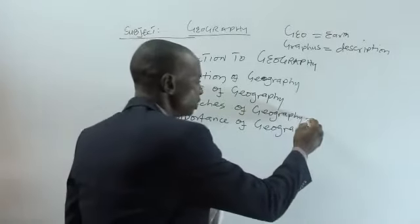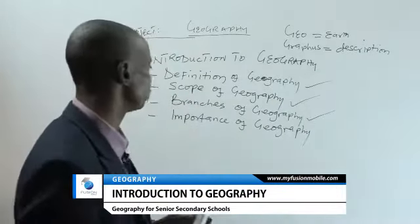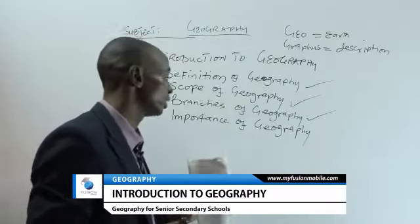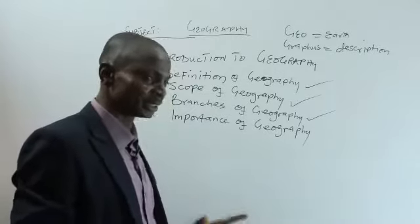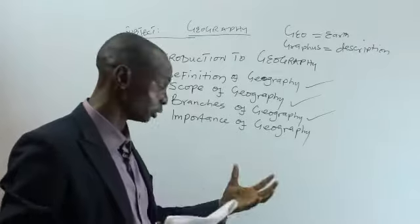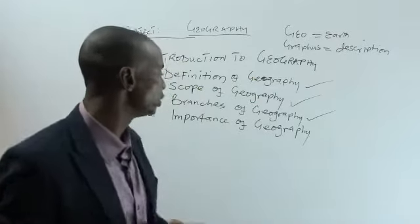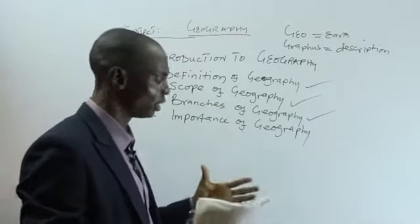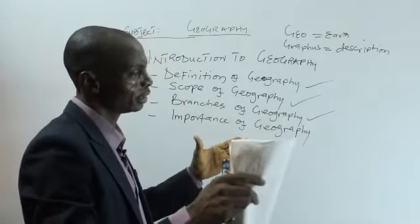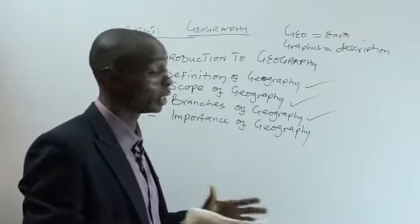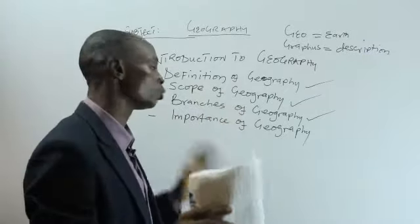Now let's look at the branches of geography. Having taken the definition and scope of geography, broadly speaking, geography is divided into two: we have human geography and we have physical geography. All other branches fall under these two broad categories. For example, regional geography — where you take a section of a country or continent like West Africa as a region and study it — falls under human geography.